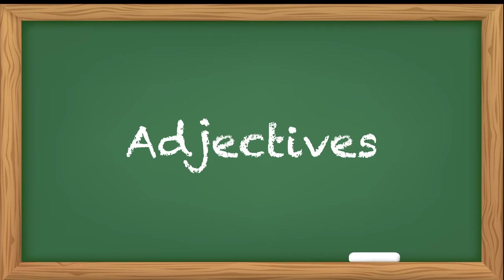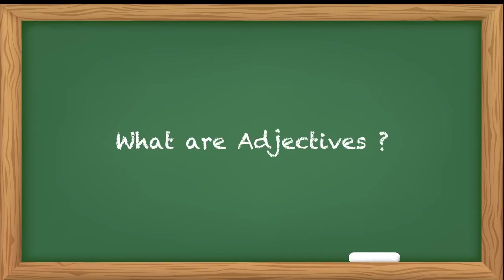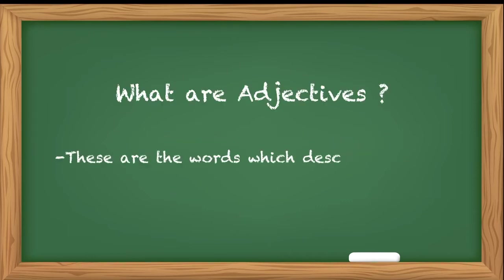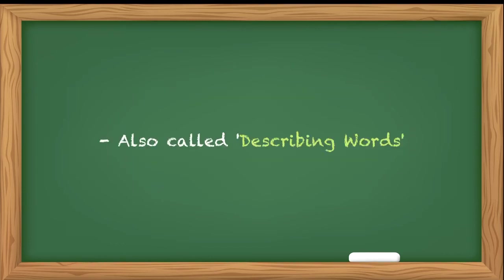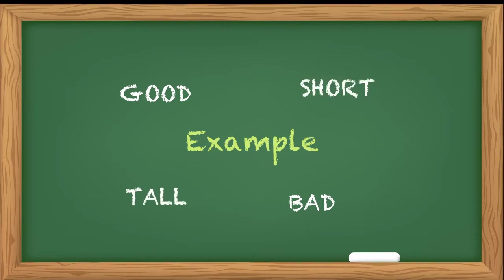Adjectives you already know. What are adjectives? These are the words which describe a noun. They are also called describing words. For example, good, bad, tall, short — all these are adjectives. They help to describe a noun.